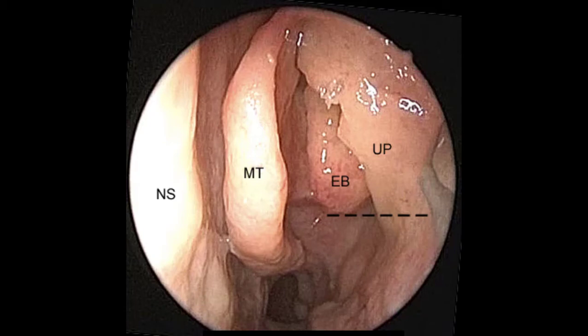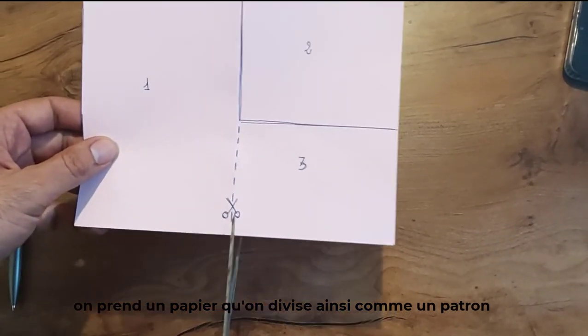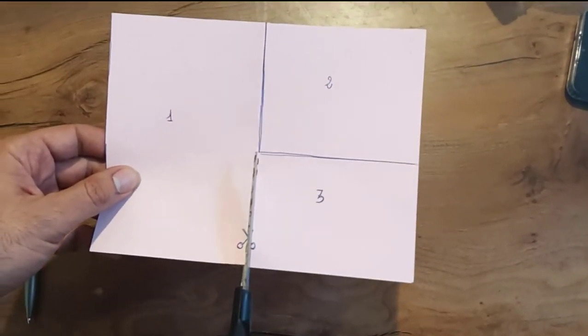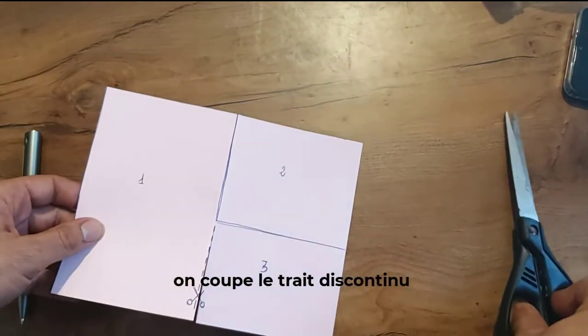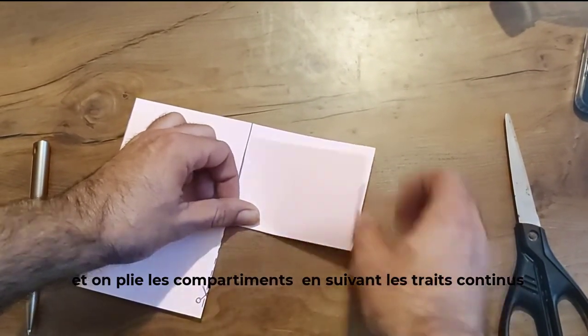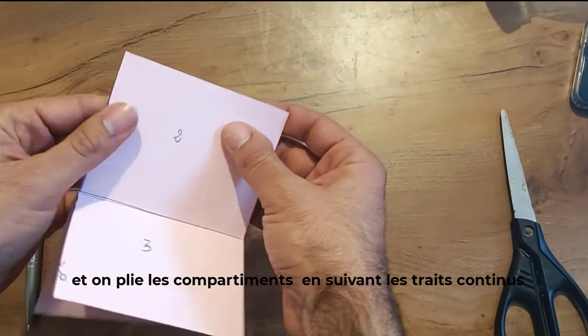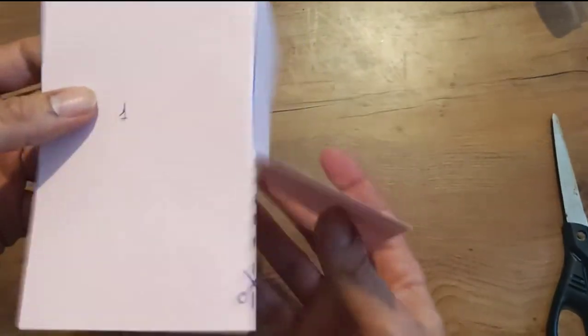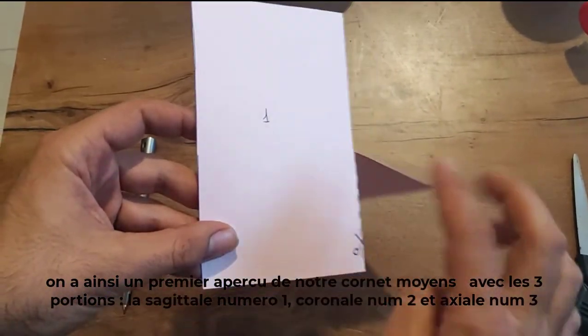Start by drawing a kind of template like this. We cut firstly at the broken line that way, then fold the paper on the continuous line. We have then a first glimpse of our middle turbinate.